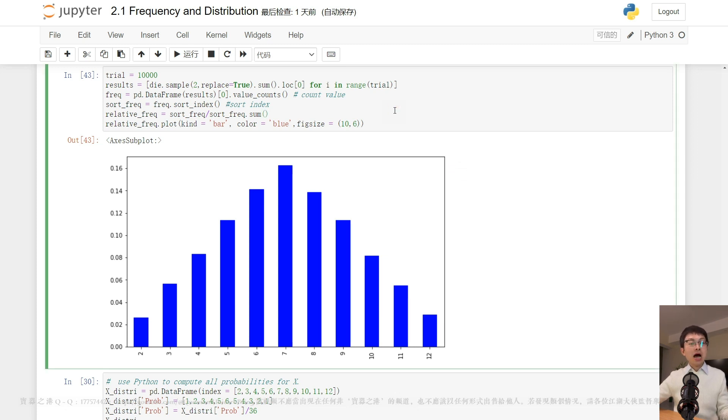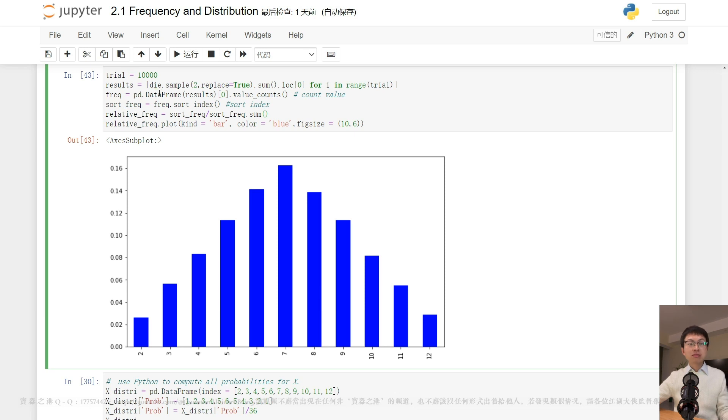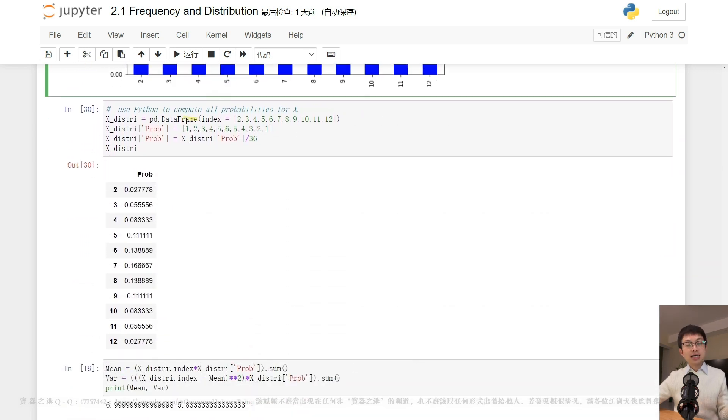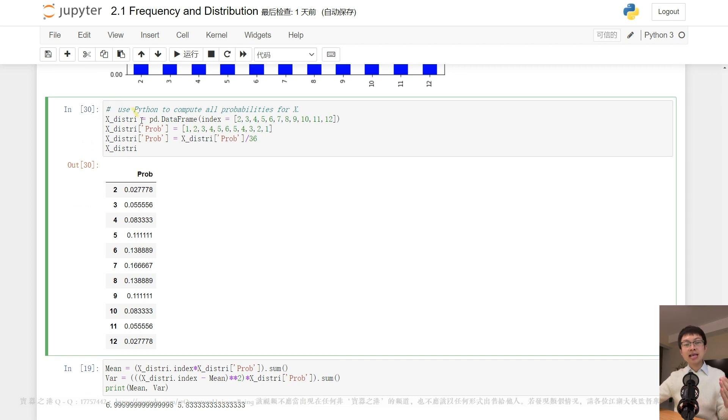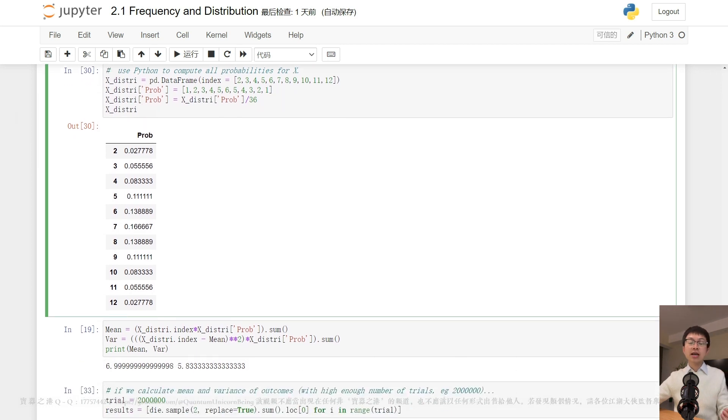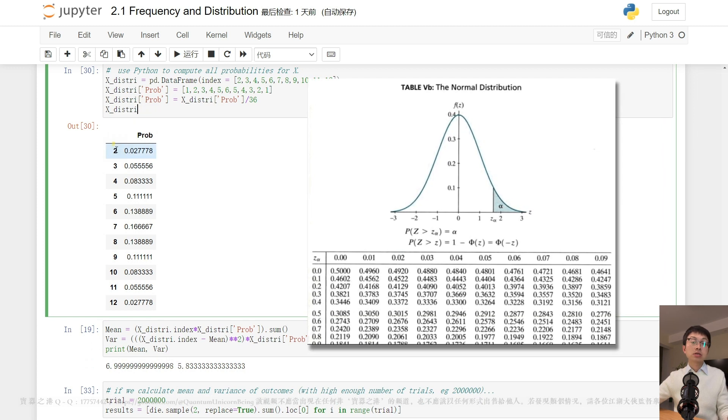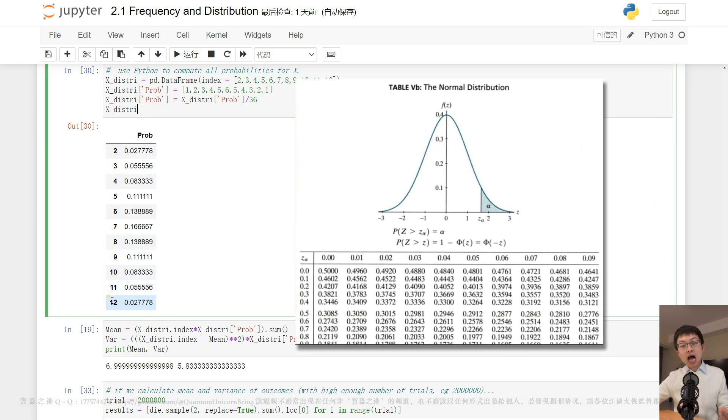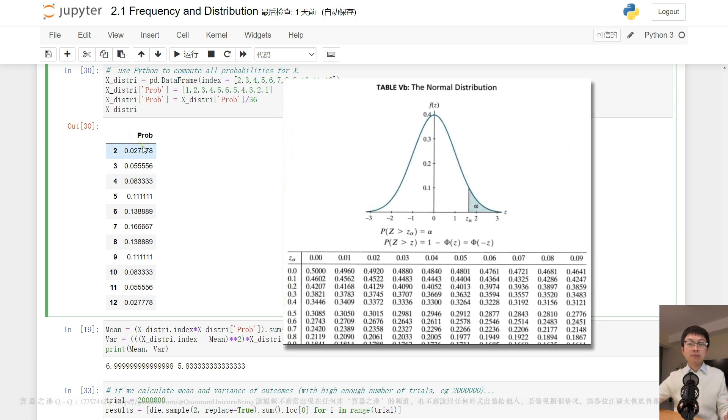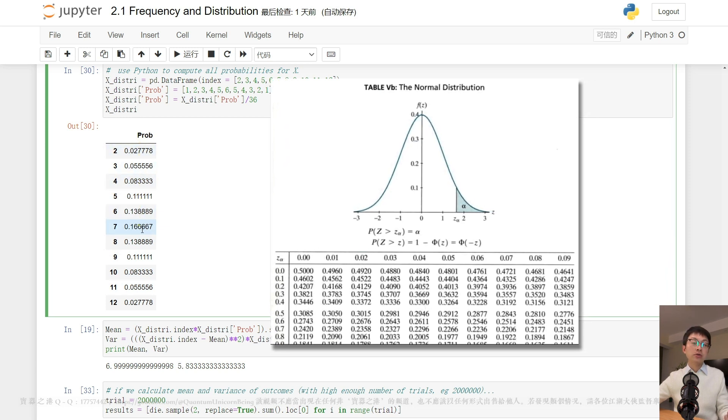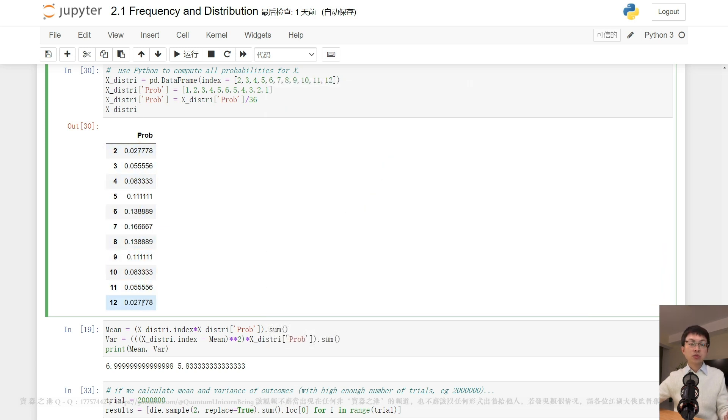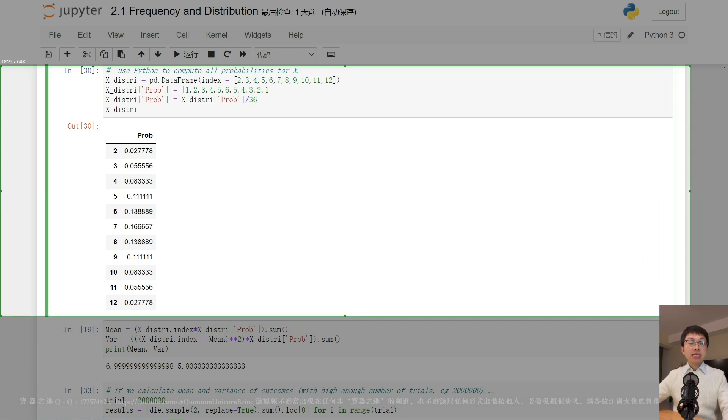Now, the distribution of a random variable is a table that contains two sets of values. One set lists the different values of the outcome, and the other set lists the probability for each value. We can use Python to compute all probabilities for X. The X distribution is the distribution table we built.